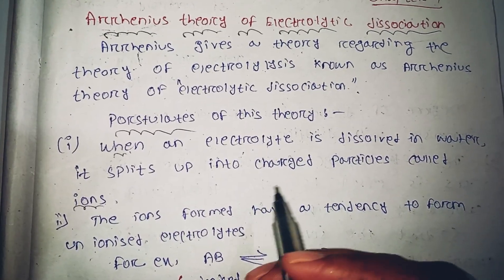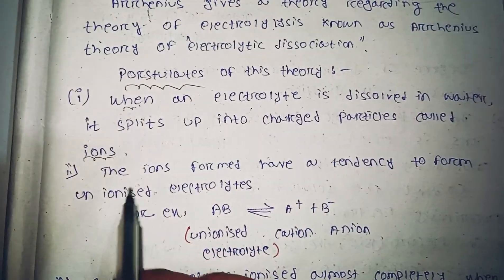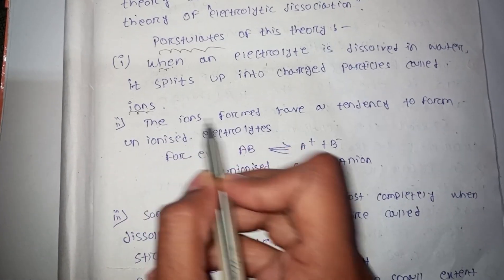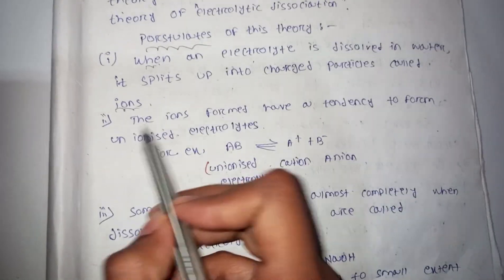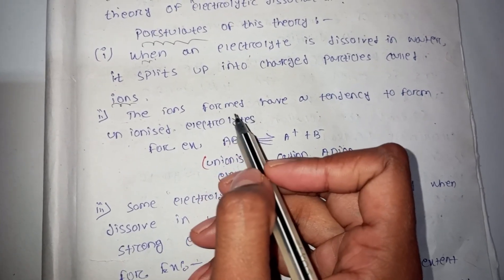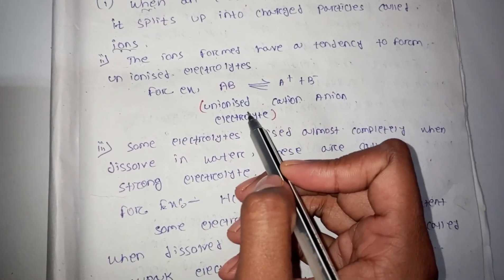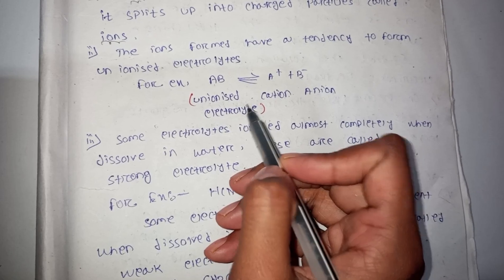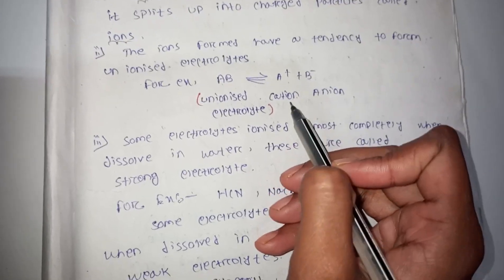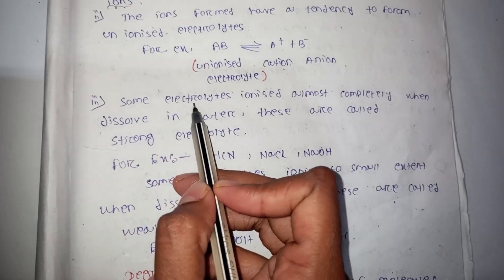When more solute is added, the ions formed have a tendency to form un-ionized electrolyte. The equilibrium can be represented as: A plus B minus ions in equilibrium with un-ionized AB.